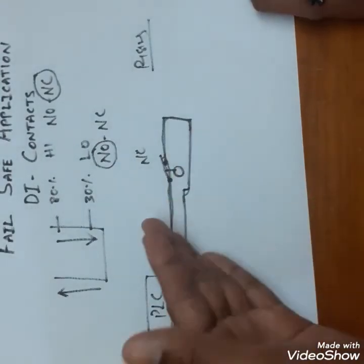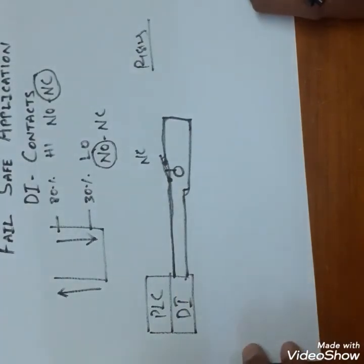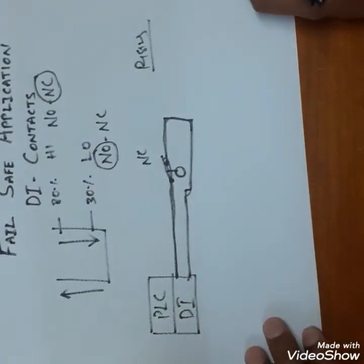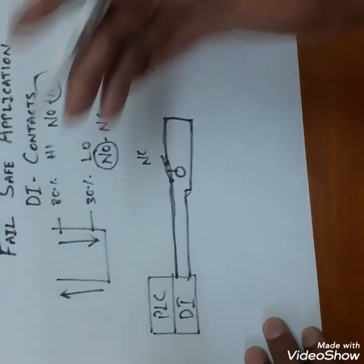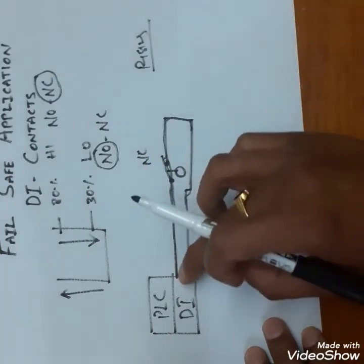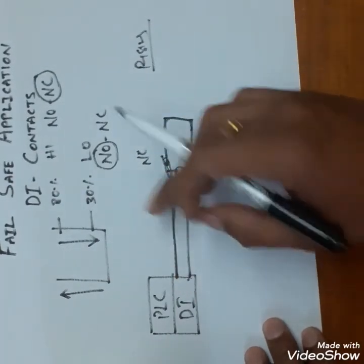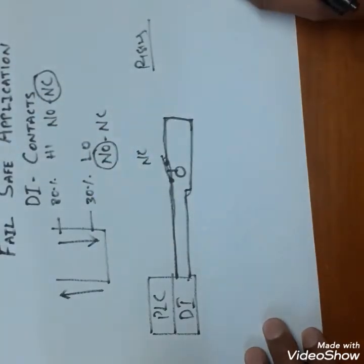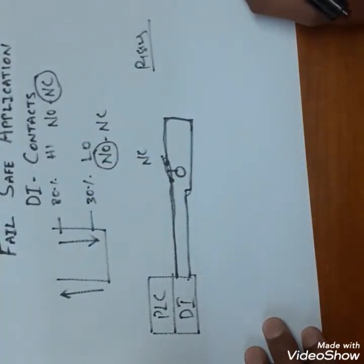If anything happens in the loop or the switch got faulty or something happens, you will get the alarm. This is fail-safe, which means if anything happens in the loop we should get the alarm. So for rising applications we should use NC.